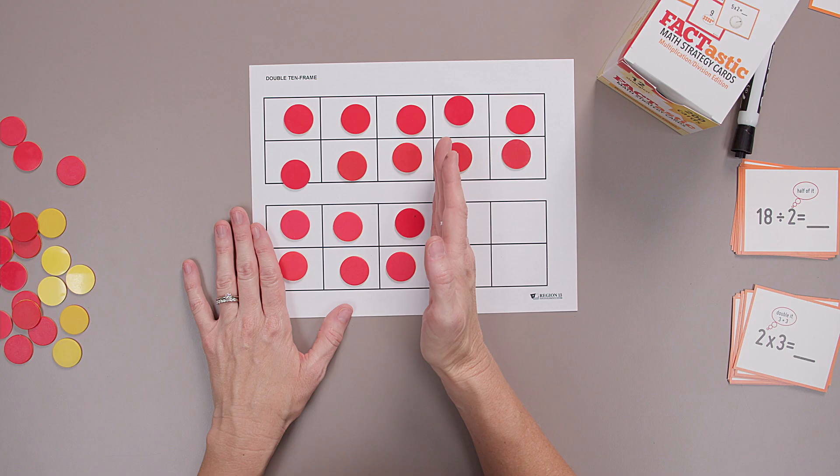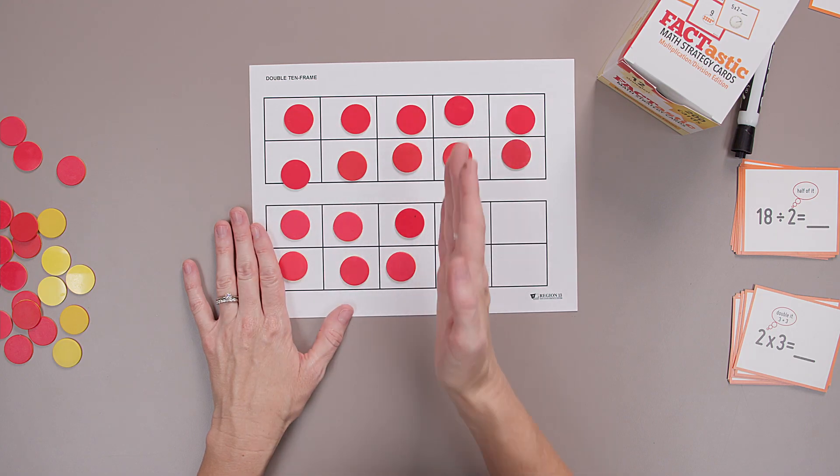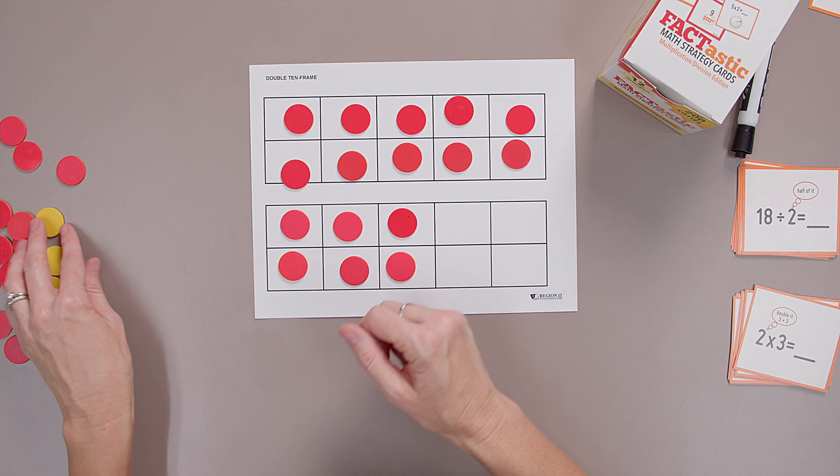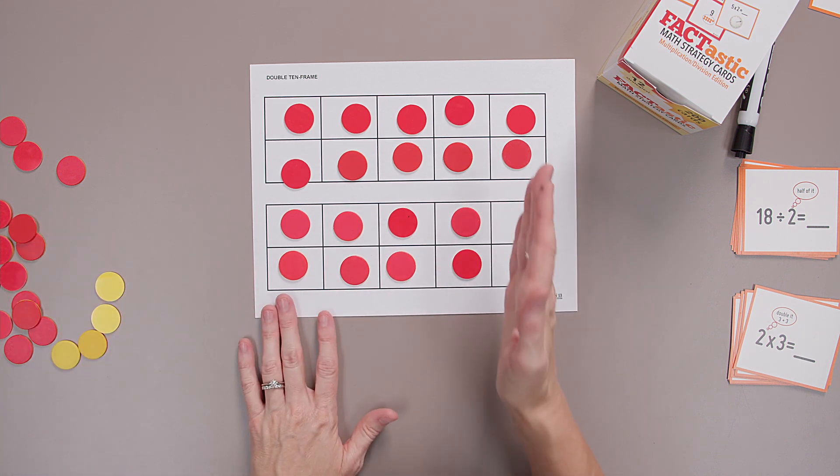Another great pattern about my twos multiples is that they're even. When I have sixteen, it's even number. When I have eighteen, it's even. Let's think about our doubles as even numbers.